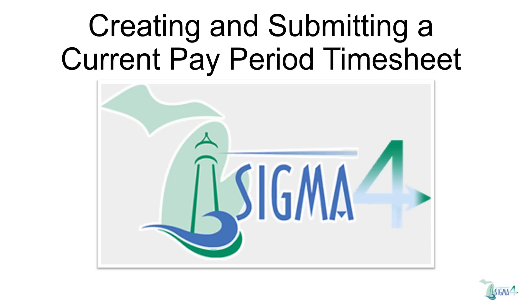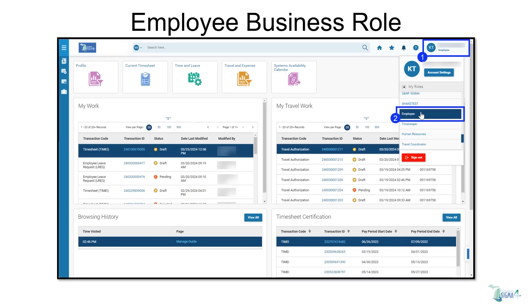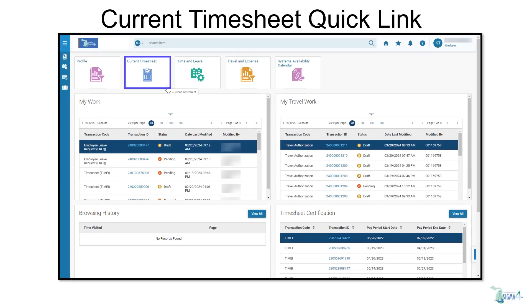Welcome to a brief video on submitting a timesheet for the current pay period in SGMA. Begin by clicking your name in the top right corner of the screen and selecting the employee business role. From the home page, click the current timesheet quick link to access the timesheet for the current pay period.